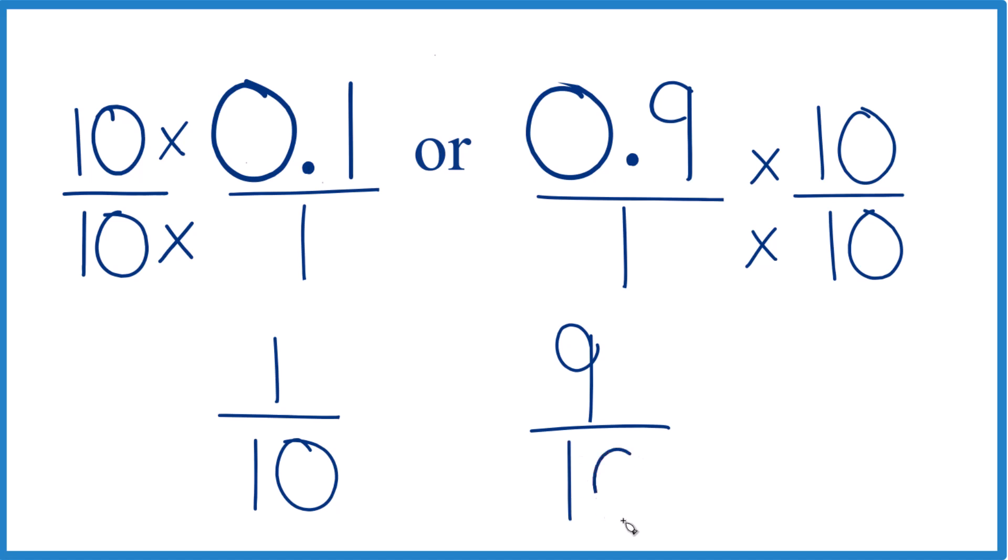So with fractions, when you have the same denominator, just compare the numerator. 9 is greater than 1, so 9 tenths, that's greater than 1 tenth. And like we said up here, 0.9 and 9 tenths, they're the same thing. So 0.9, that's greater than 0.1. That's what we found before.